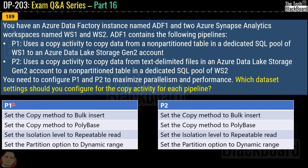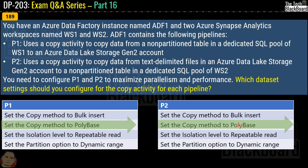You need to configure P1 and P2 to maximize parallelism and performance. For each pipeline you must select one dataset setting for the copy activity. The correct answer for both pipelines is PolyBase — PolyBase for P1 and PolyBase for P2. To be honest, the answer for P2 could also be bulk insert, but since PolyBase is the faster option, PolyBase is selected.